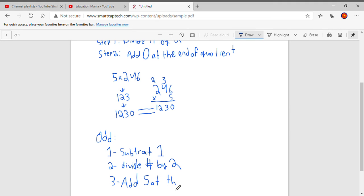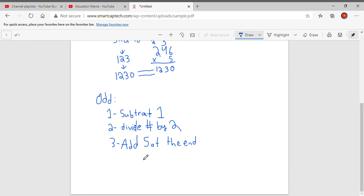So you're not actually adding, just you're putting it at the end. So let's try this. Let's do five times 379. So first step is you subtract one. When you subtract one, you get five times 378. Now you have to divide the number by two.